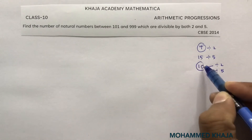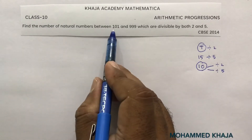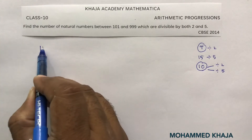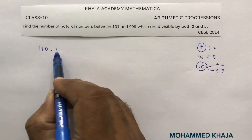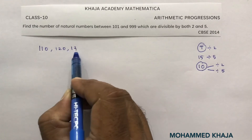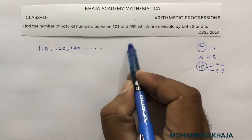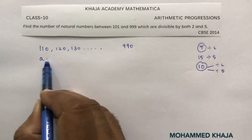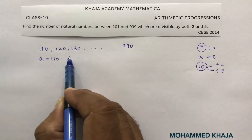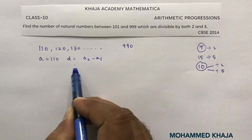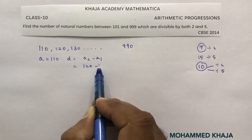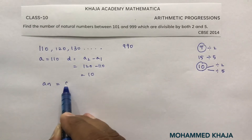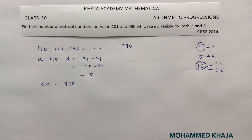The multiples of 10 between 101 and 999 start at 110, then 120, 130, and so on, with the last term being 990. So the first term a is 110, the common difference d is 10 (since 120 minus 110 equals 10), and the nth term is 990.